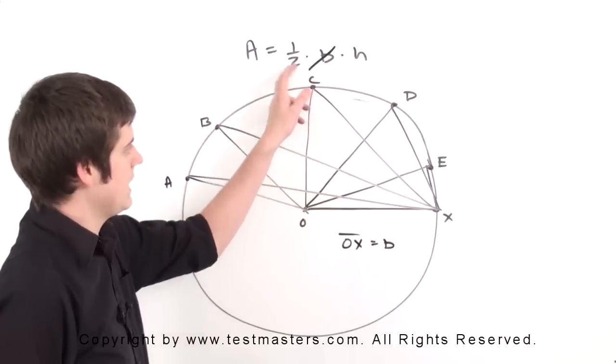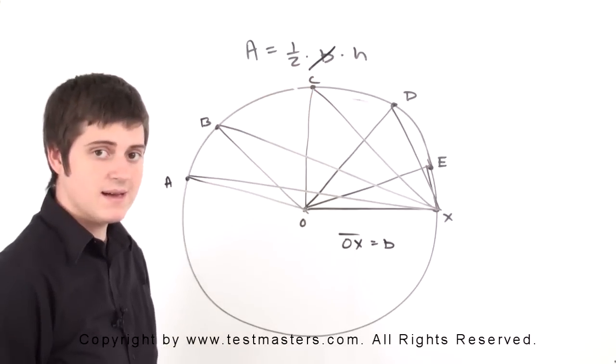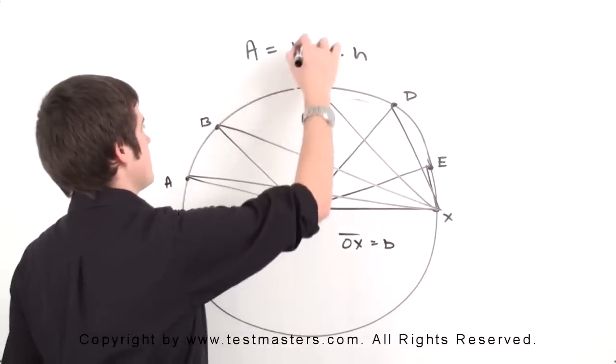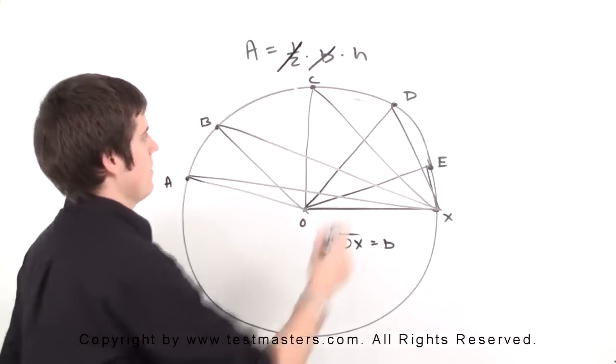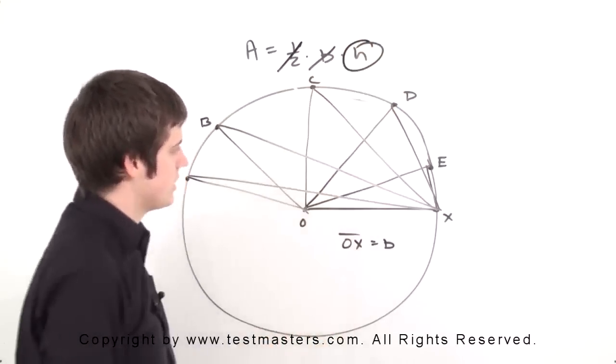Now in the formula, we have one-half. The one-half is constant for every triangle we deal with, so this can be eliminated as well. What we're really looking at overall is just the heights of the triangles.